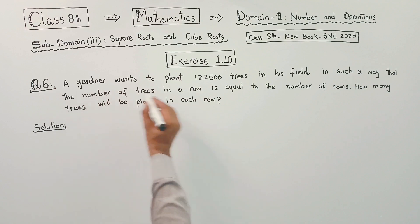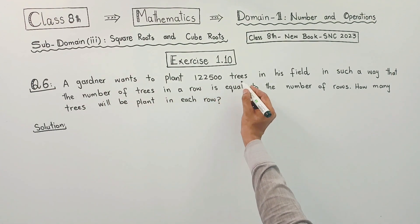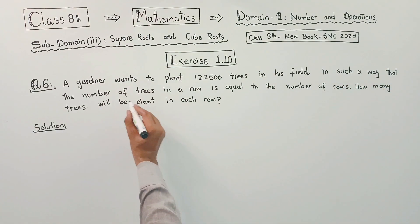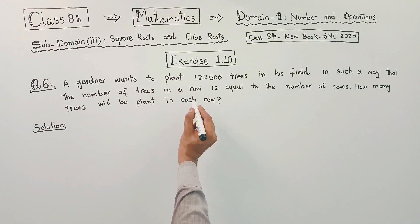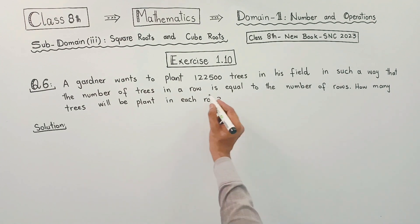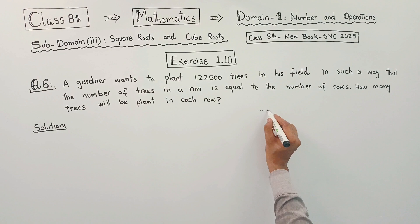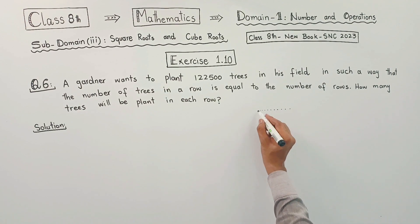The gardener wants to plant 1,22,500 trees in a row in such a way that the number of trees in a row equals the number of rows.